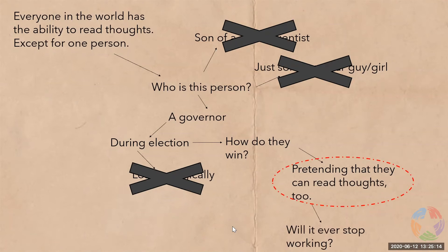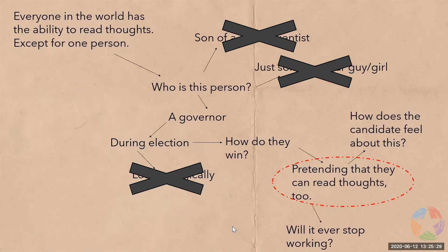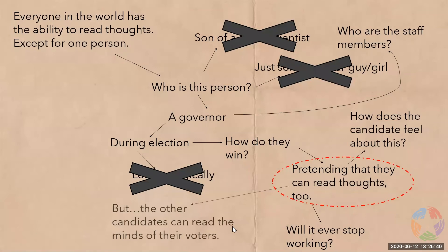But the questions don't stop there — we need to keep asking. If he gained some advantage in the election by pretending, will it ever stop working? How does the candidate feel about this pretentious strategy? And we can always go back to previous branches: who are the staff members? Can other candidates read the minds of their voters?